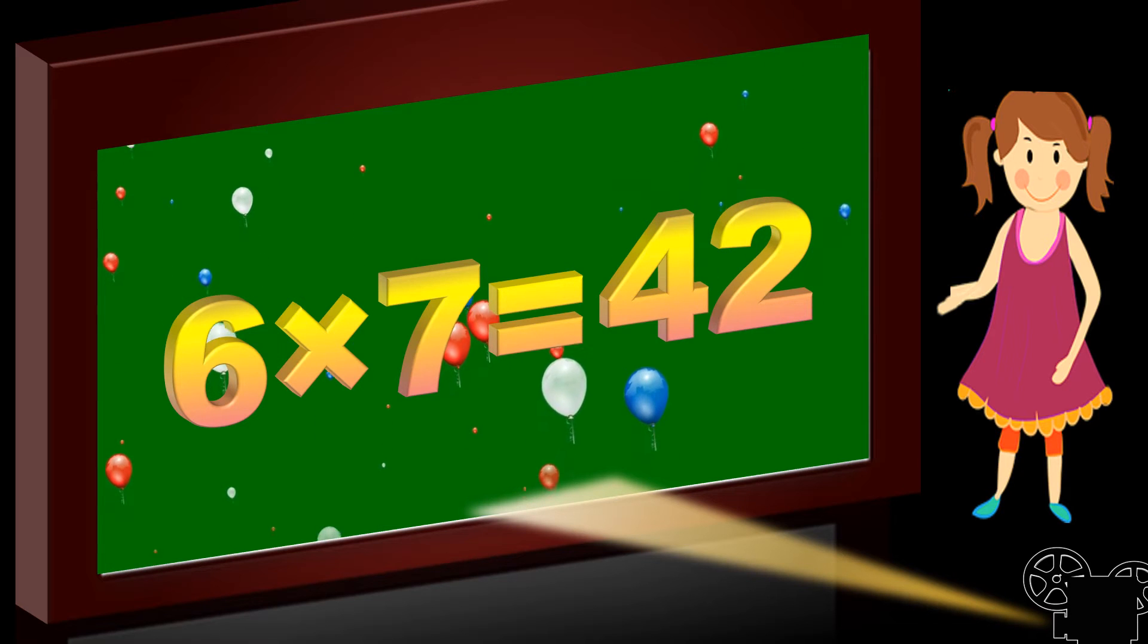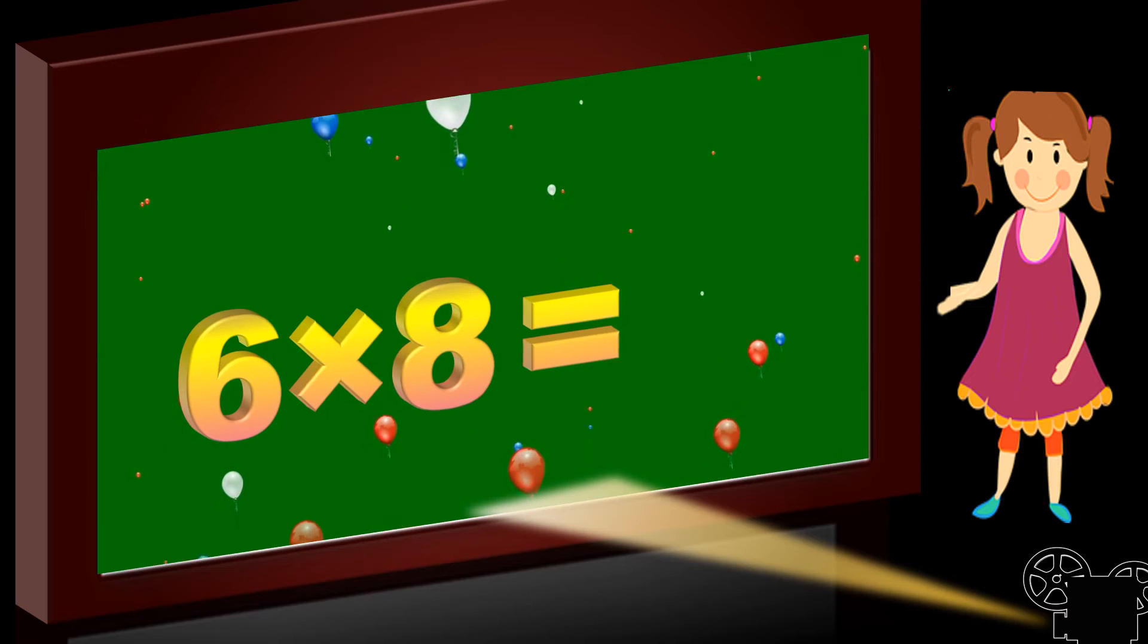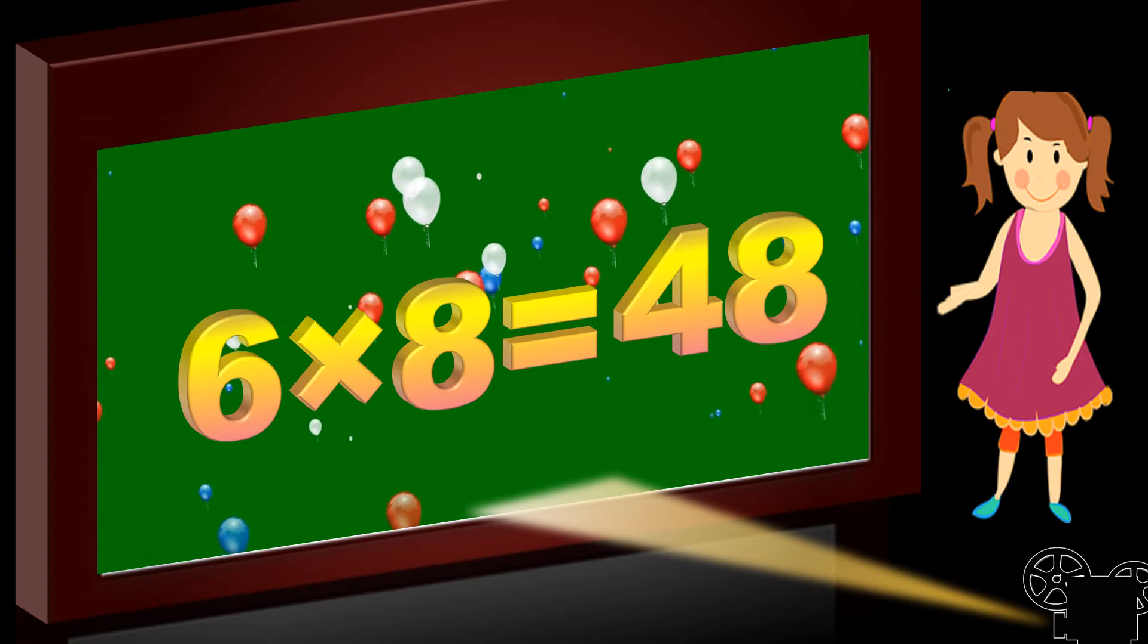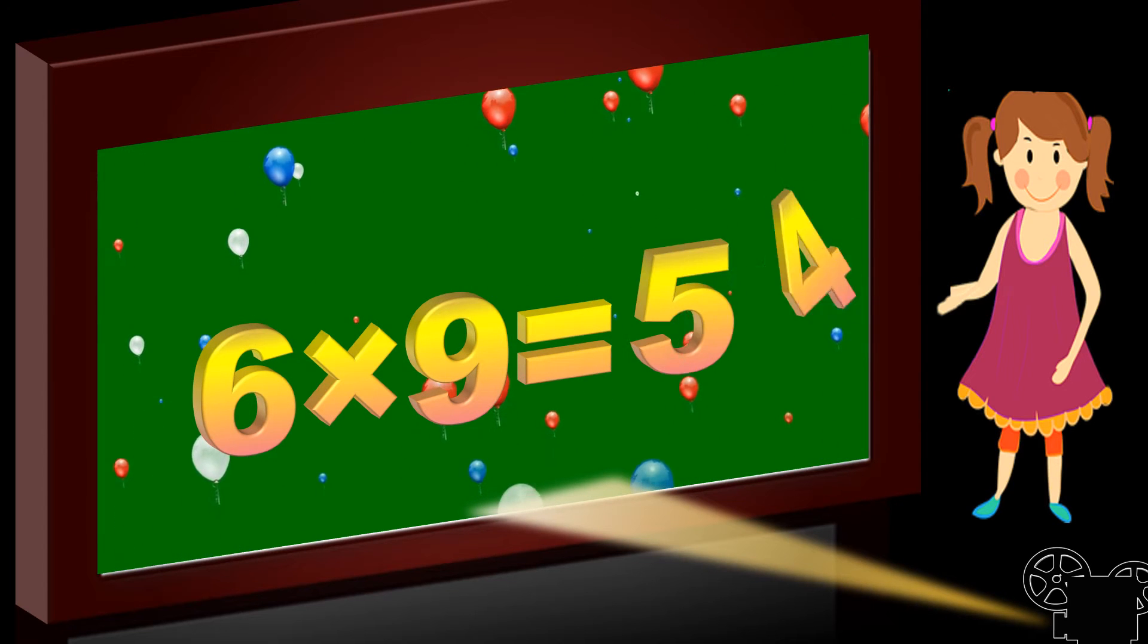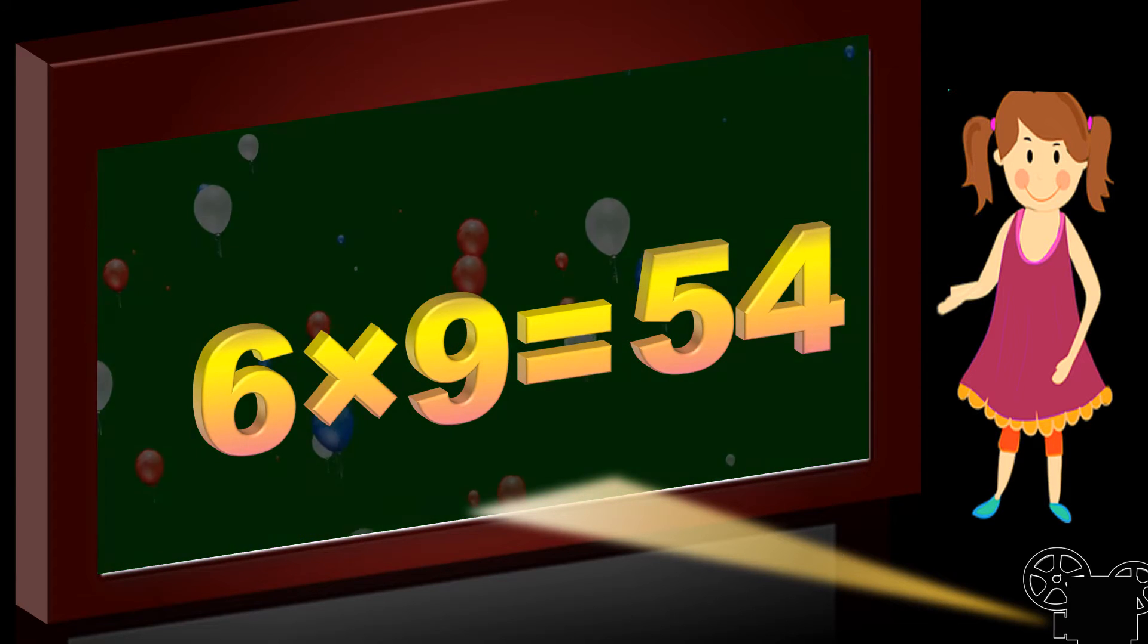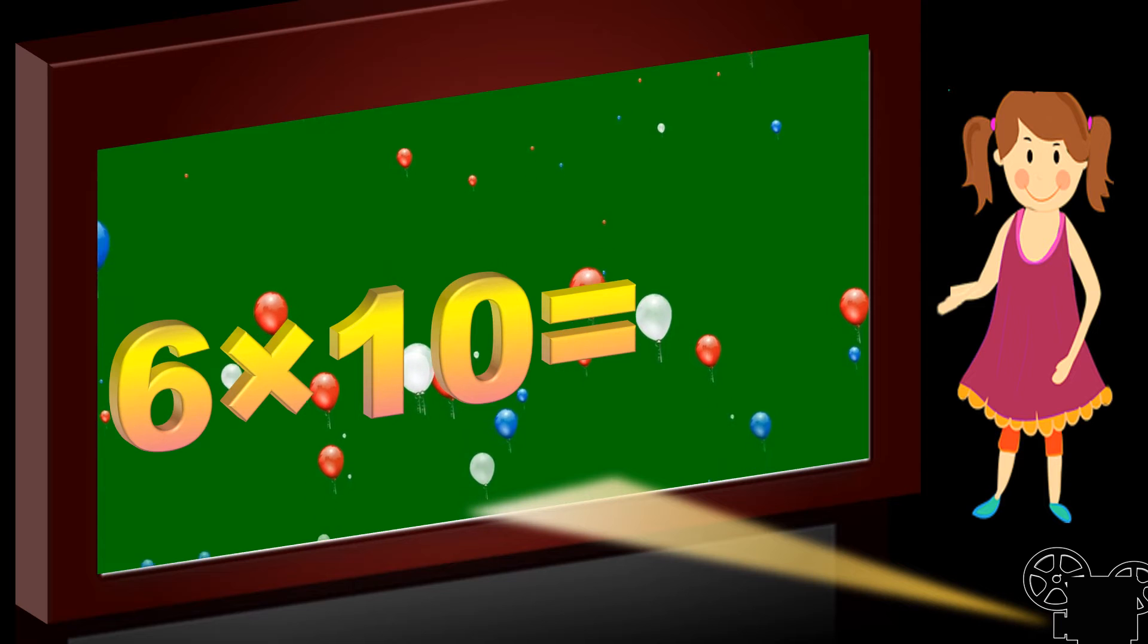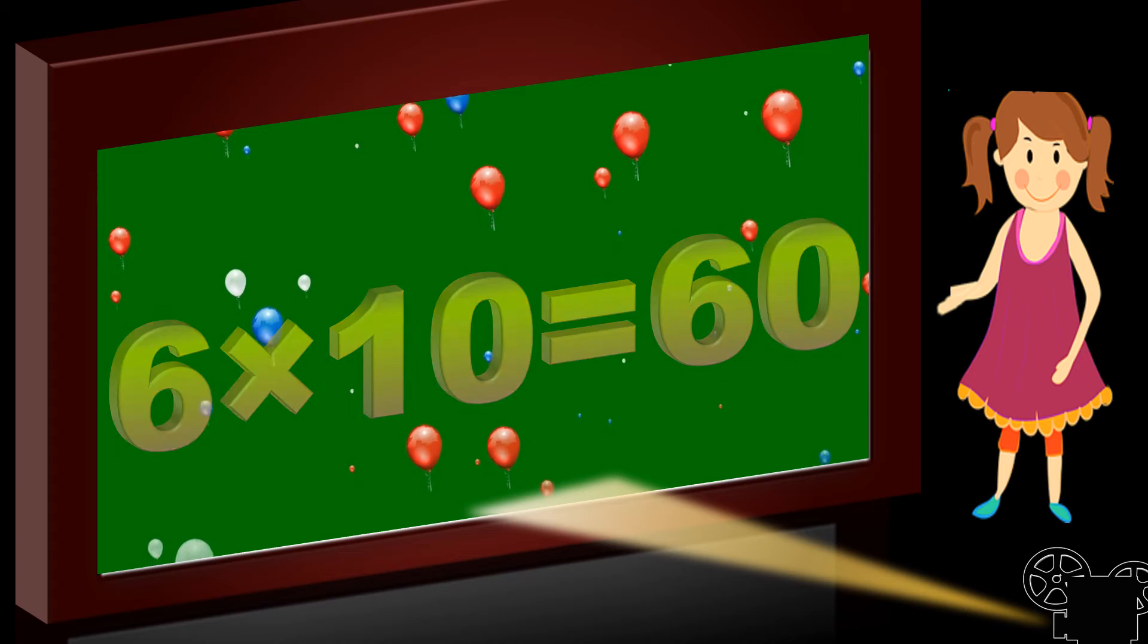6's are 34, 6, 6's are 34. Six eights are forty-eight, six eights are forty-eight. Six nines are fifty-four, six nines are fifty-four, six nines are fifty-four, and the last six tens are sixty, six tens are sixty.